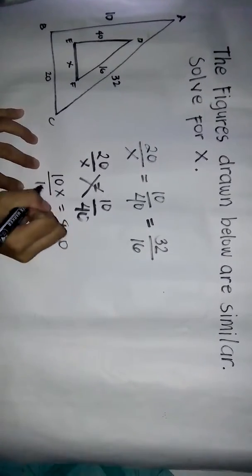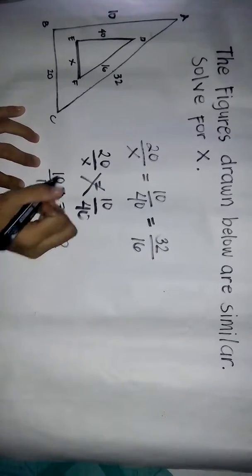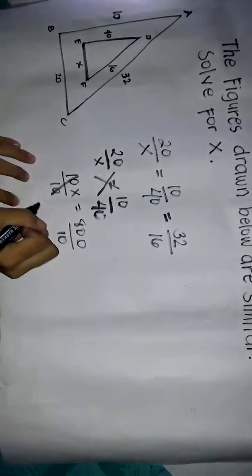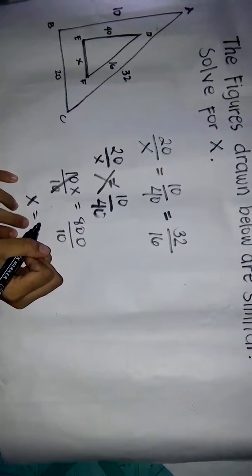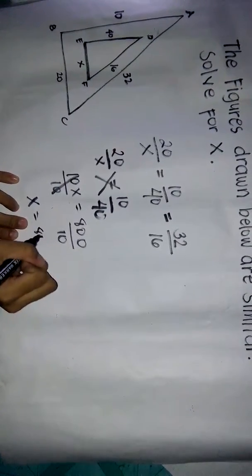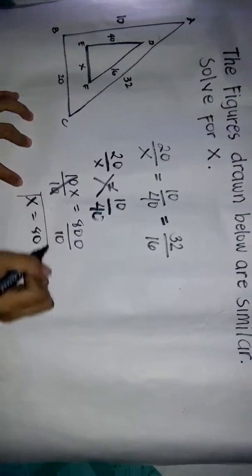Now, divide both sides by 10. On the left side, cancel the 10 and copy the X. This equals 800 divided by 10, which equals 80. So X equals 80.